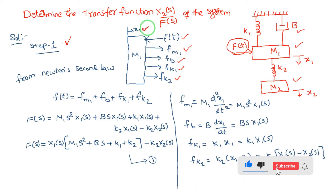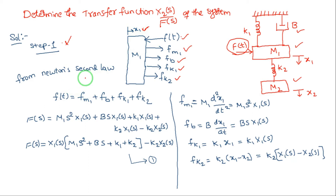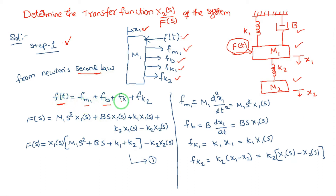The displacement for m1 is x1, since there are two displacements. Now apply Newton's second law: the sum of applied forces equals the sum of opposing forces. So f(t) = fm1 + fb + fk1 + fk2. There are four opposing forces.